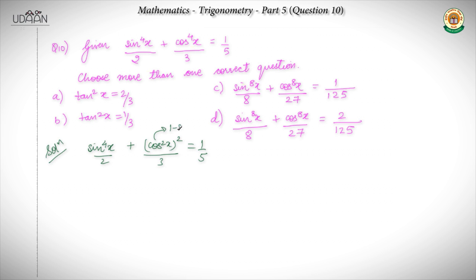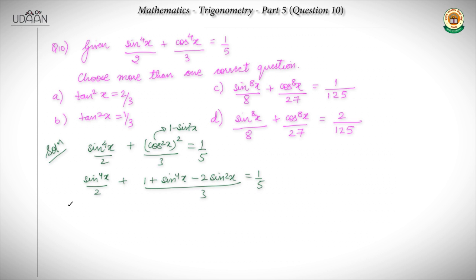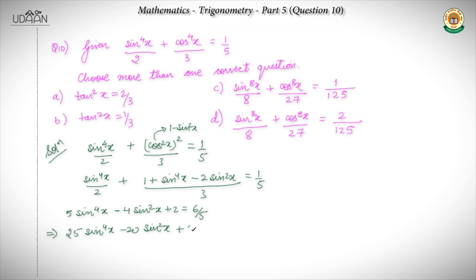Now I can write cos²x equals 1 minus sin²x. So when I expand this: sin⁴x/2 plus (1 minus sin²x)² upon 3 equals 1/5. This gives us 1 plus sin⁴x minus 2sin²x divided by 3 equal to 1/5. When I simplify this equation, I get 5sin⁴x minus 4sin²x plus 2 equals 6/5. This implies 25sin⁴x minus 20sin²x plus 4 equals 0.